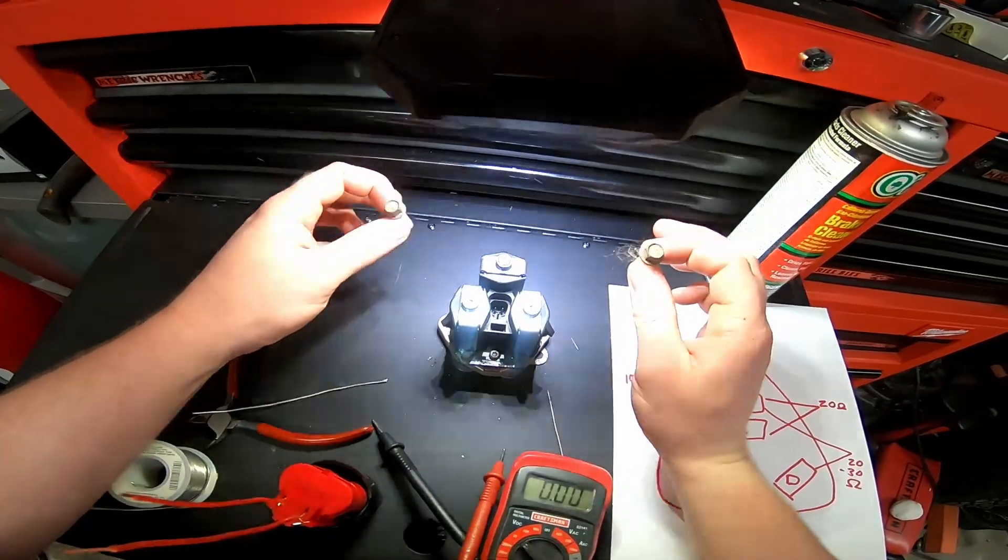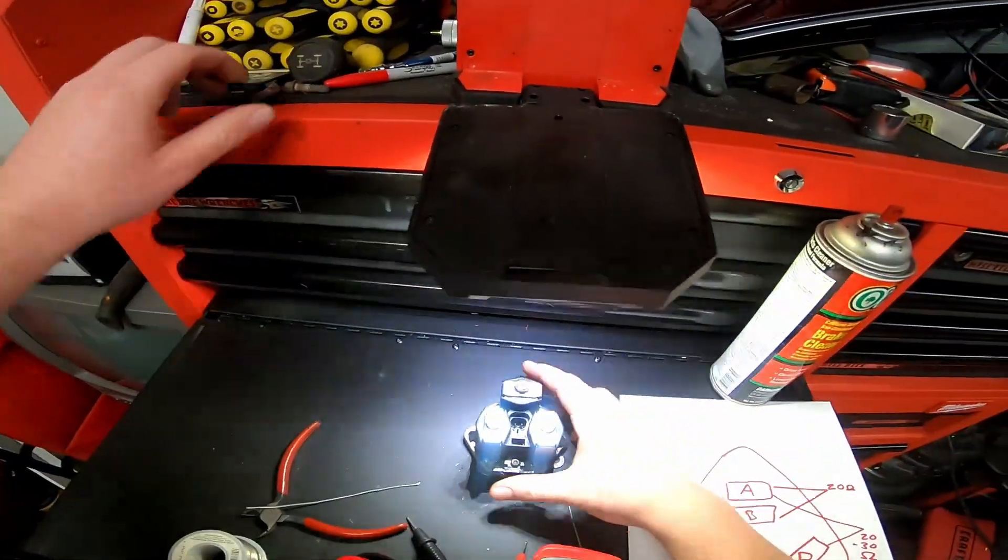To get this off the vehicle, you remove the two 10 millimeter bolts, pull it off.